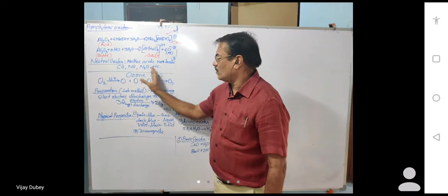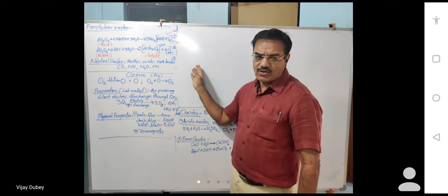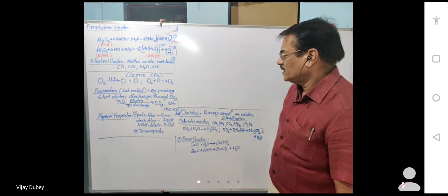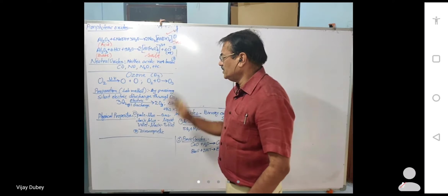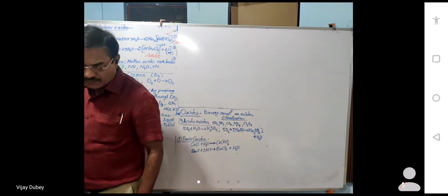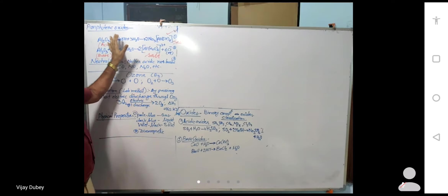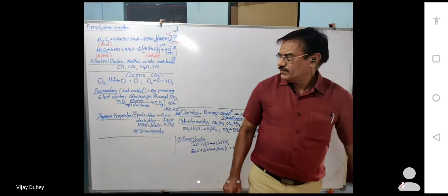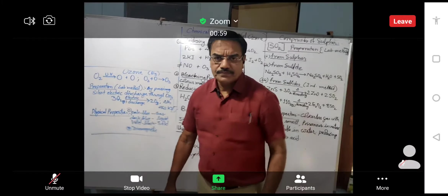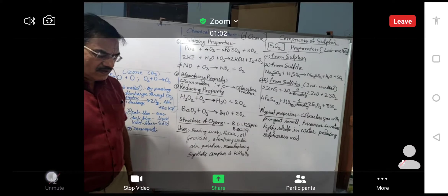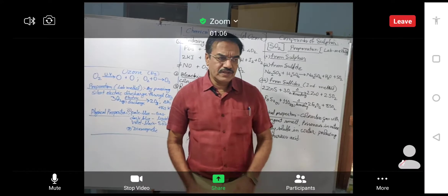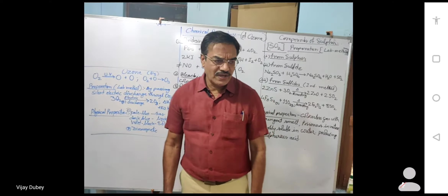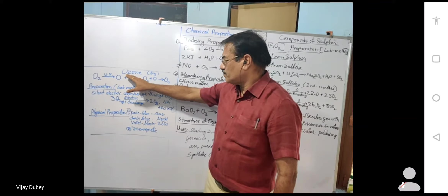Neutral oxides are neither acidic nor basic in nature. These include carbon monoxide (CO), nitric oxide (NO), and dinitrogen oxide (N₂O). So we have covered dioxygen and types of oxides. Next we will take ozone.